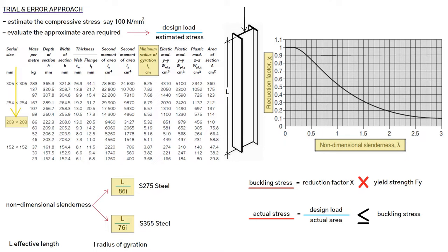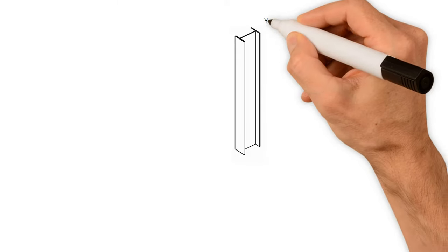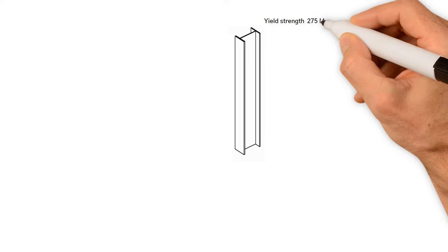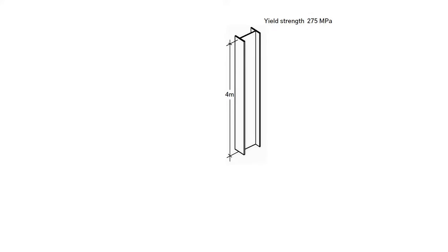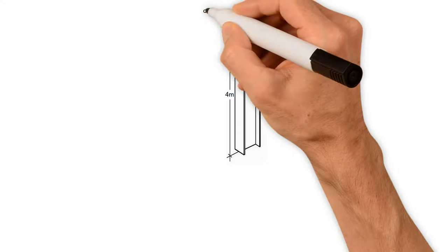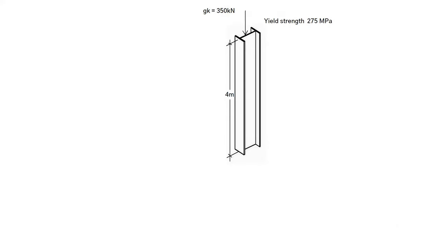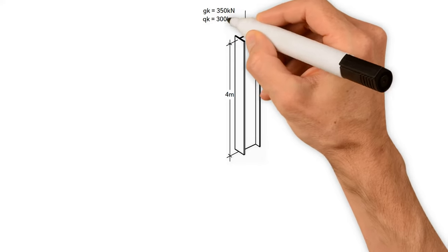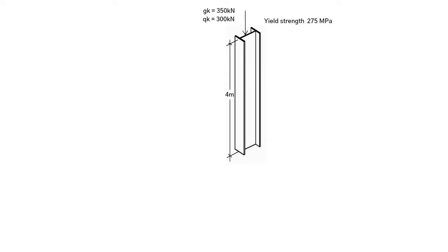Let's start with the following application example. A pin-ended column with a yield strength of 275 N per millimetre squared, 4 meter long is subjected to axial permanent load of 350 kilonewtons, and variable load of 300 kilonewtons.